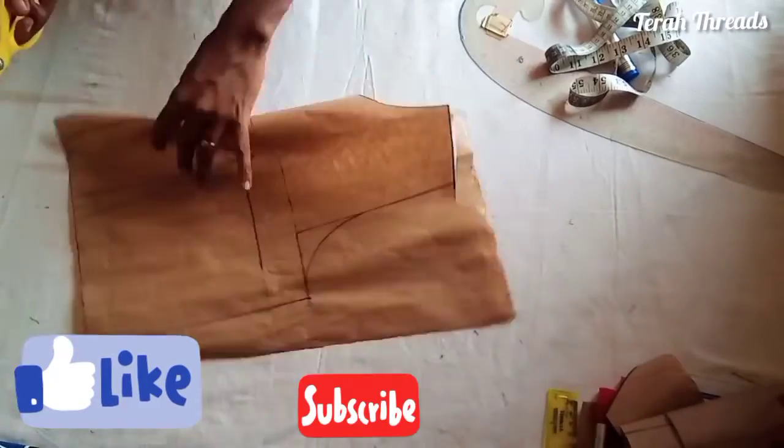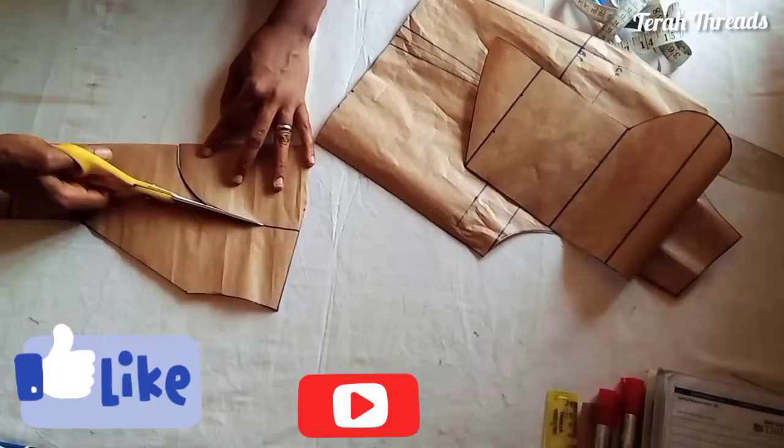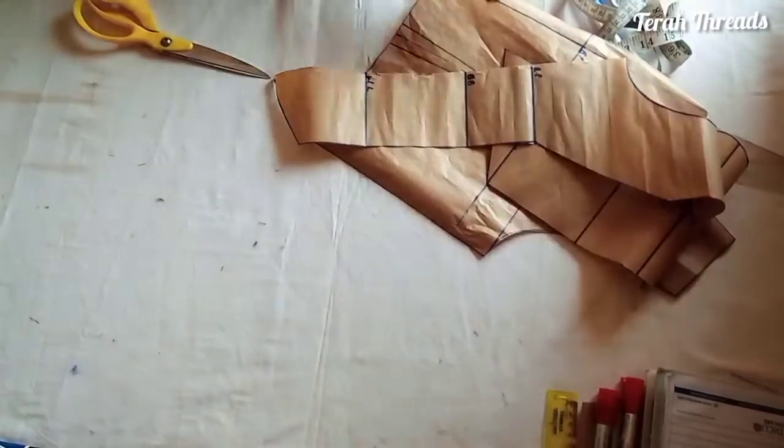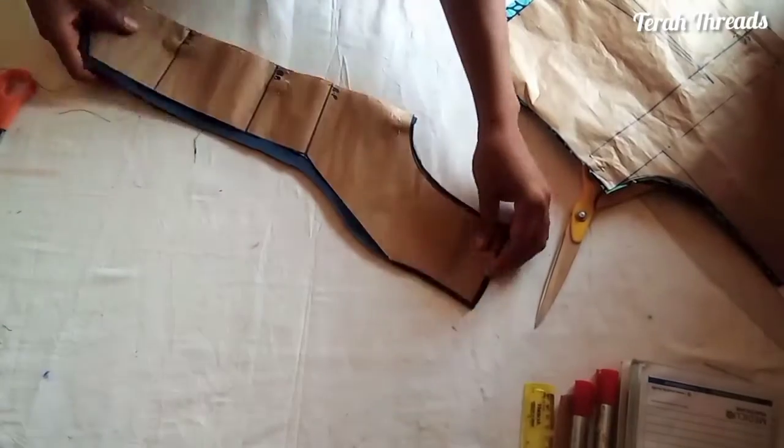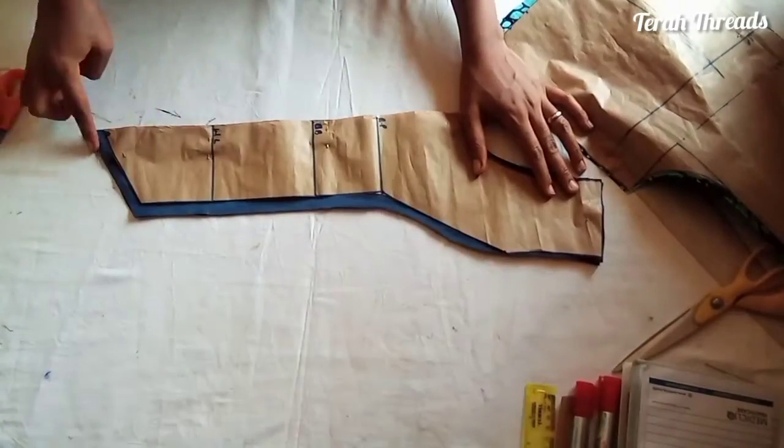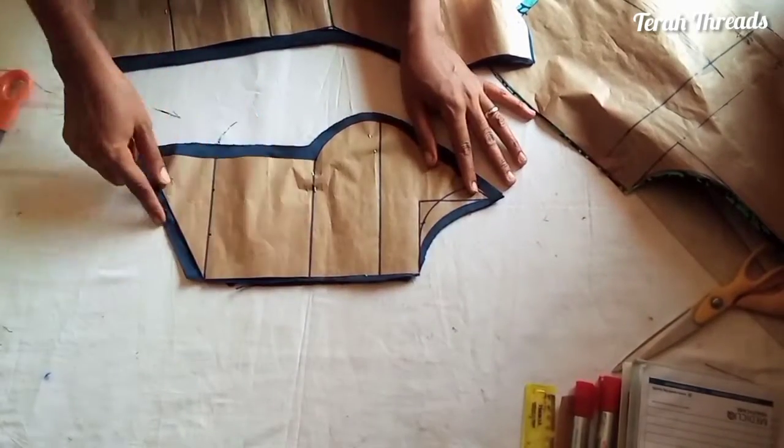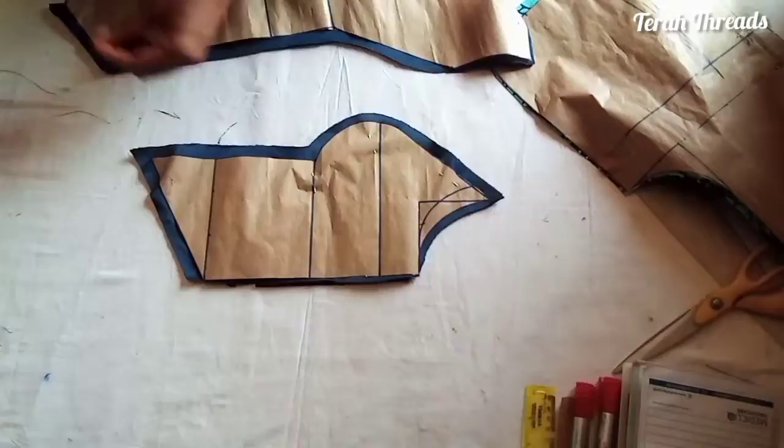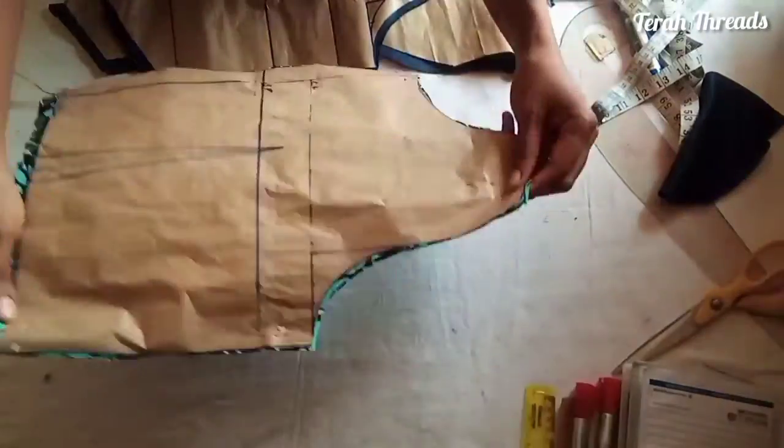I went ahead and cut out the fabric. Remember to add your joining allowance. This is the center front. I'll be using the velvet material for my front, then the main African print for the back. Remember to add your joining allowance. I'll go ahead and fix the dart and join the front together.